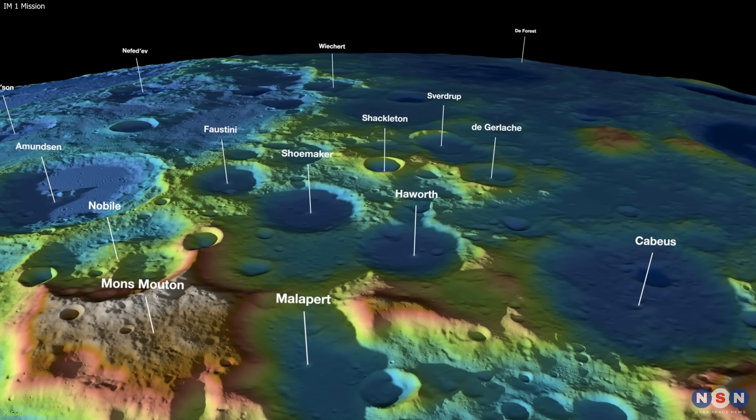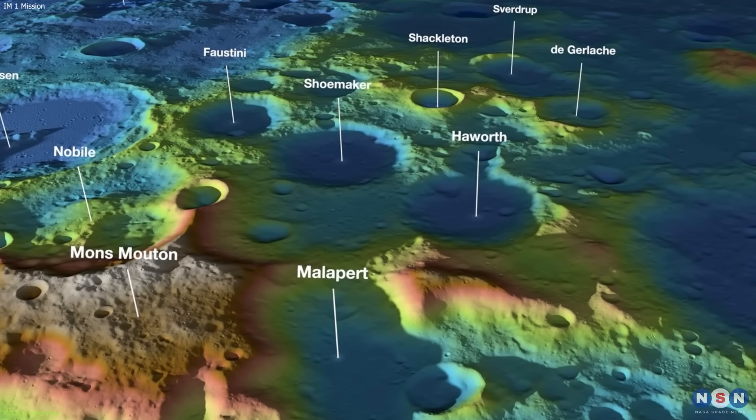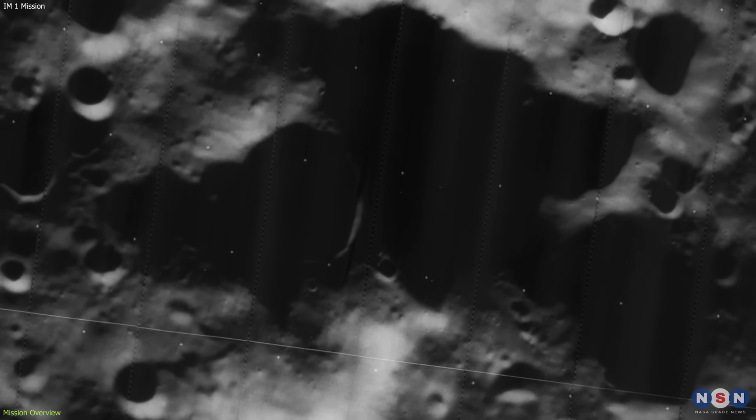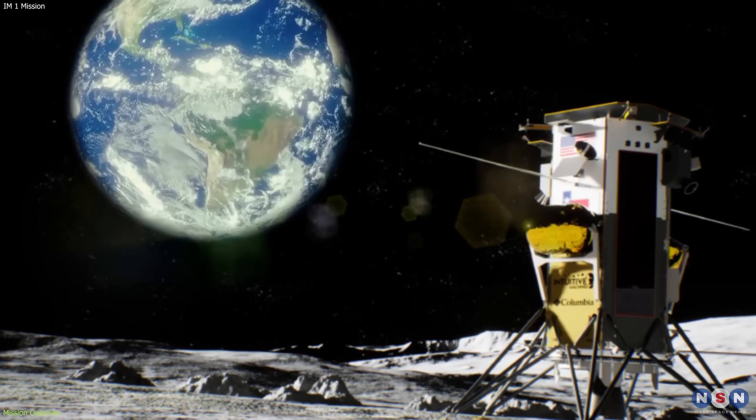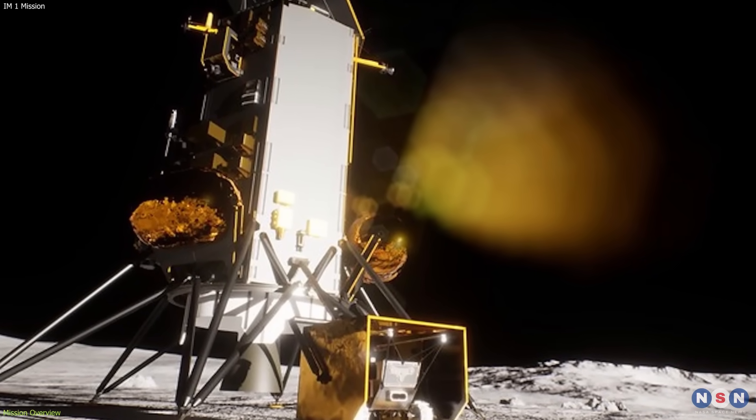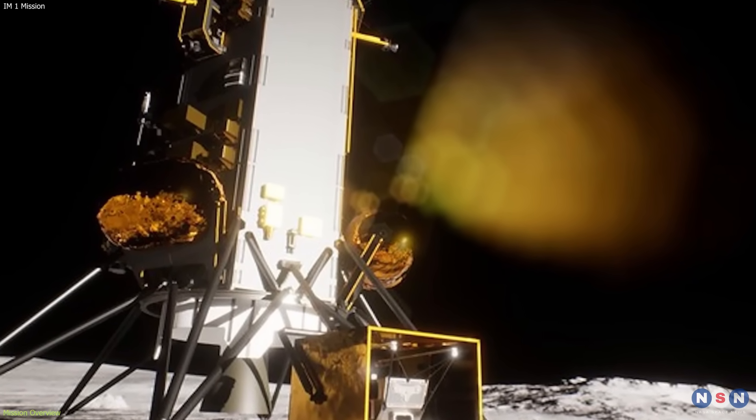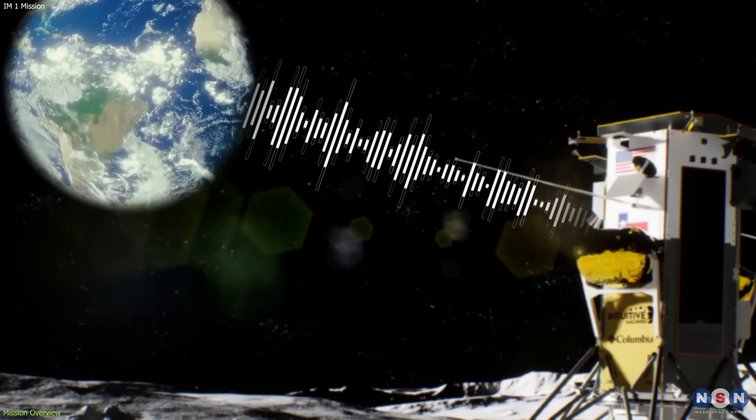The landing site is Crater Malapert A, located near the south pole of the Moon. This site was chosen because it offers a good balance of sunlight, temperature, and communication with Earth. It will operate for about 14 days on the surface, powered by solar panels and batteries. It will communicate with Earth using a high-gain antenna and a relay orbiter.